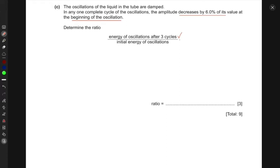The first thing to remember is that the energy of the oscillations is proportional to the square of the maximum distance. Which means that the ratio for energy after three cycles to the initial energy would be the amplitude squared after three cycles divided by the initial amplitude squared.